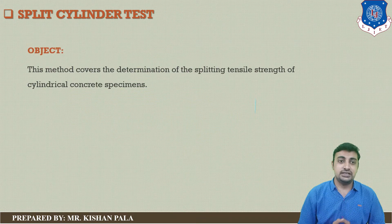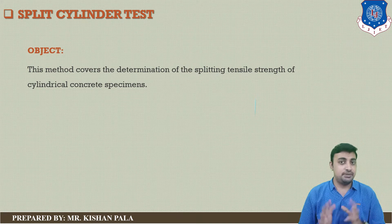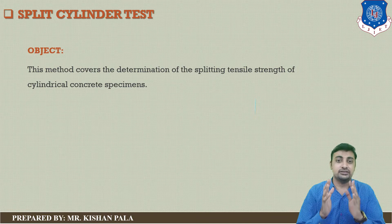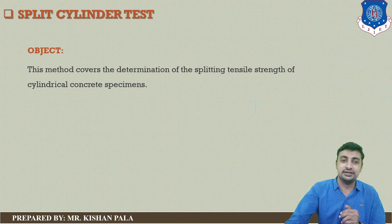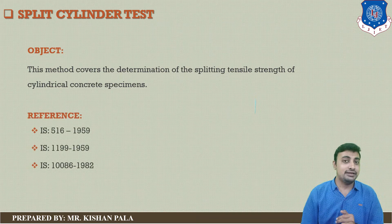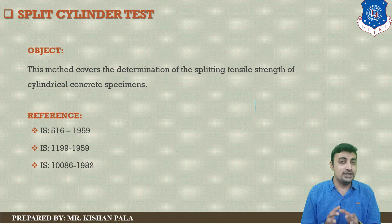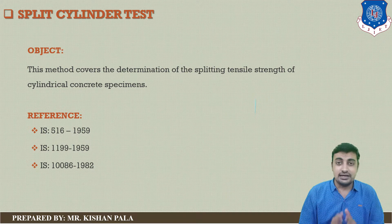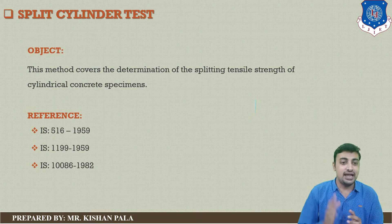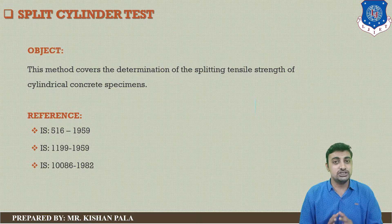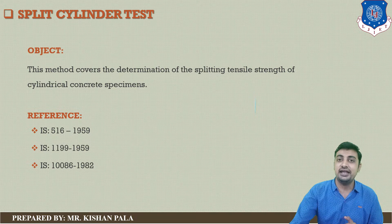Split cylinder test, split tensile test. Our objective is to determine the splitting tensile strength of a cylindrical concrete specimen by applying a load to the specimen. You can refer to Indian Standard 516:1959, Indian Standard 1199:1959, and Indian Standard 10086:1982.